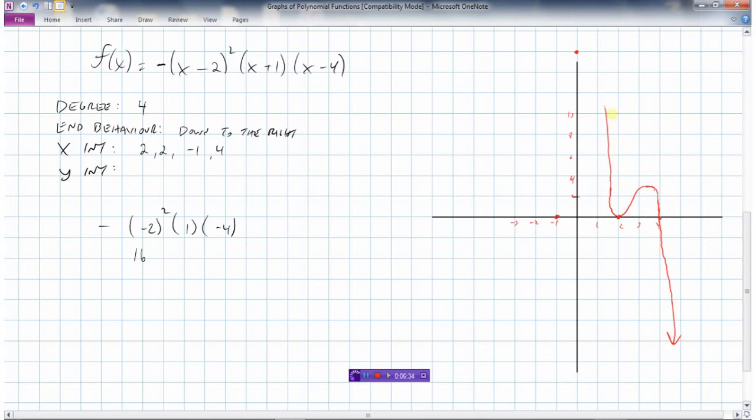Then my y-intercept's up here, and I've got a single root at minus 1. So it ends up looking something like this here.